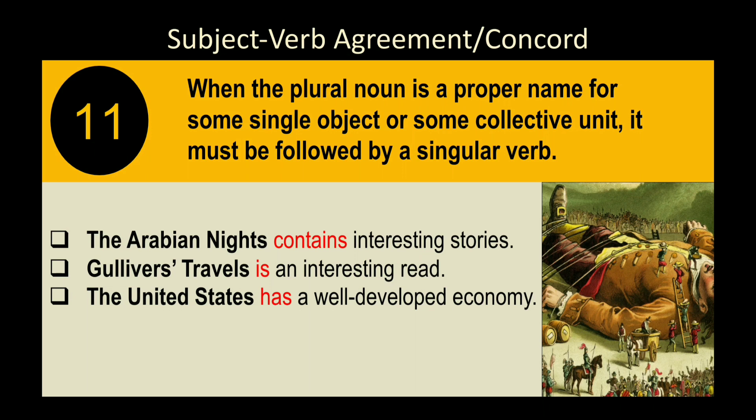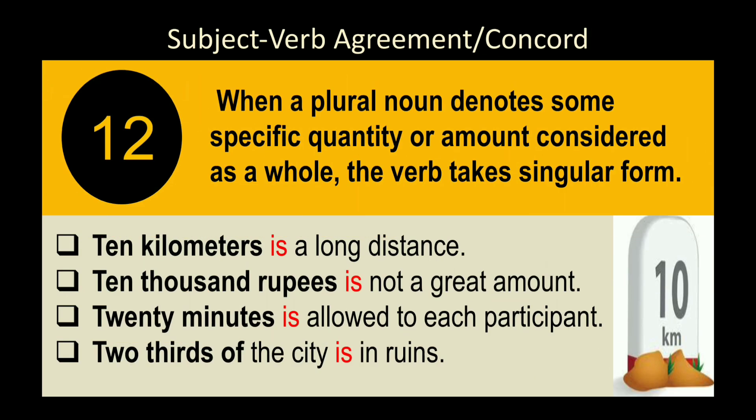Rule 13: When a plural noun is a proper name for a single object or collective unit, it takes a singular verb. Examples: 'The Arabian Nights' is a book — singular verb. 'Gulliver's Travels' — singular verb. 'The United States' is a country — singular verb. In all these cases, singular verbs are used.